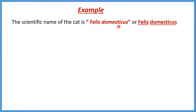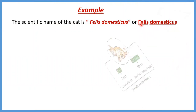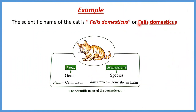مثال على كده: الscientific name بتاع الcat هو Felis domesticus — زي ما إنتو شايفين مكتوبة بالitalic letters، أو نكتبها Felis domesticus بس نعمل تحتها خط. هنا Felis دي هي الgenus — مكتوبة بالcapital letter. وdomesticus دي هي الspecies — مكتوبة بالsmall letter. Felis معناها cat في اللاتين، وdomesticus معناها domestic في اللاتين.